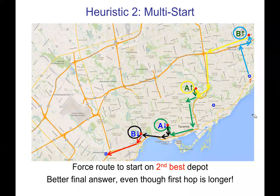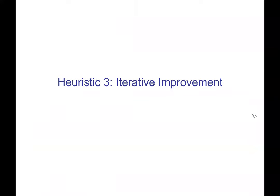This multi-start technique is something you can apply to any algorithm — it can always get you more quality if you have more CPU time available. So let's go on to our third heuristic. We started with greedy, moved on to multi-start which can be layered on top of any algorithm, and now let's talk about iterative improvement.